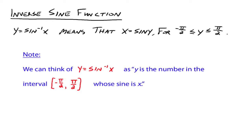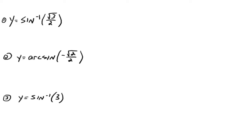Let's look at an example. y equals the arc sine of the square root of 3 over 2. We're looking for a number between negative pi over 2 and pi over 2 whose sine is the square root of 3 over 2. That would be pi over 3 — this is where knowing the unit circle comes in handy. The sine of pi over 3 is equal to the square root of 3 over 2.